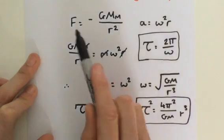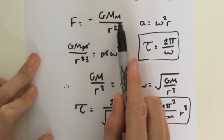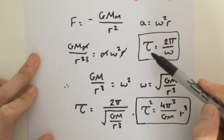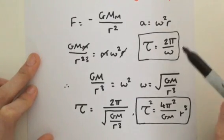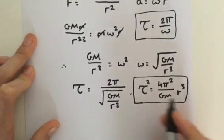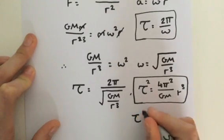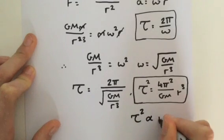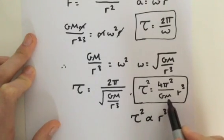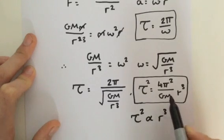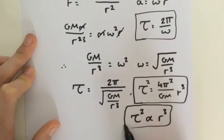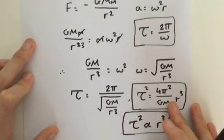Just by knowing F = -GMm/r², a = ω²r, and τ = 2π/ω, we should see from this that τ² is proportional to r³, because 4π²/GM is just a constant of proportionality. And that is the proof for Kepler's third law of planetary motion.